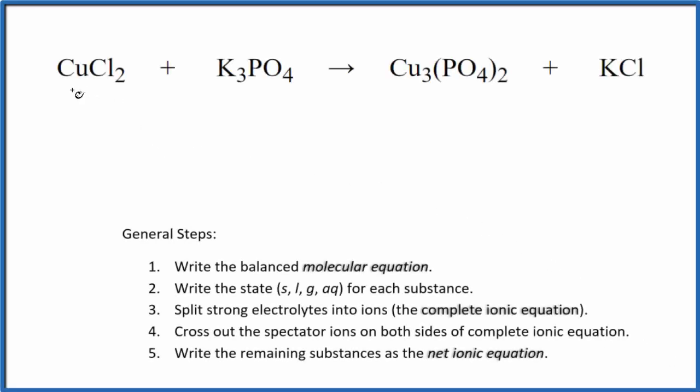To write the net ionic equation for CuCl2 plus K3PO4, this is copper 2 chloride plus potassium phosphate, we first need to balance the molecular equation.